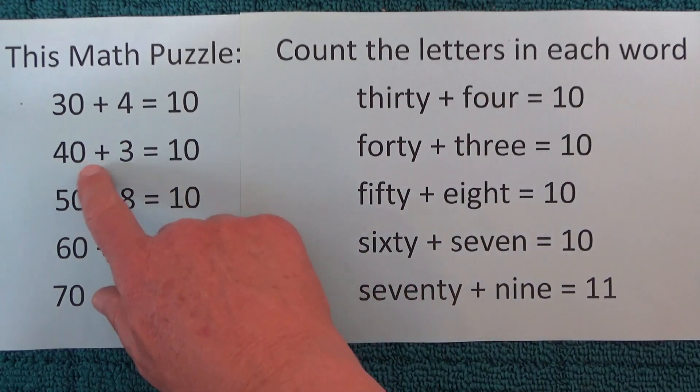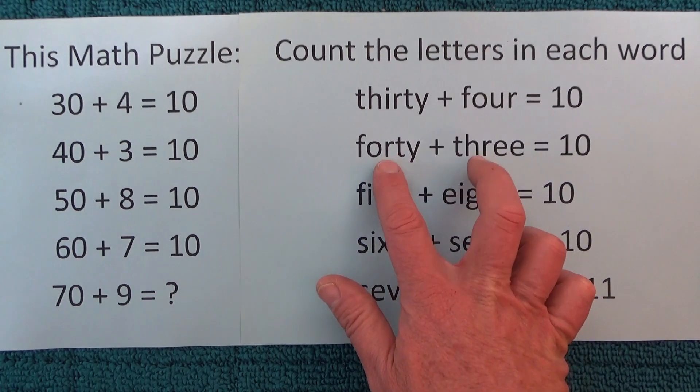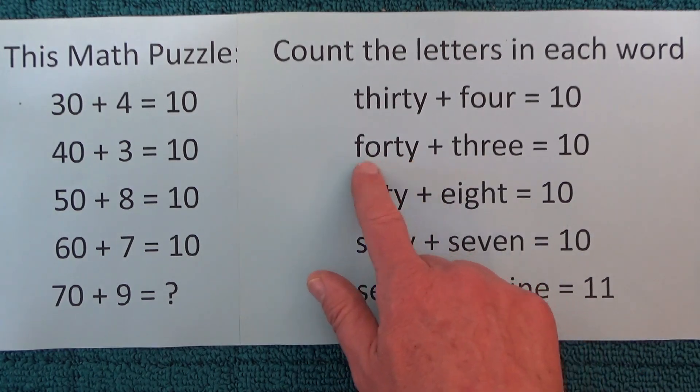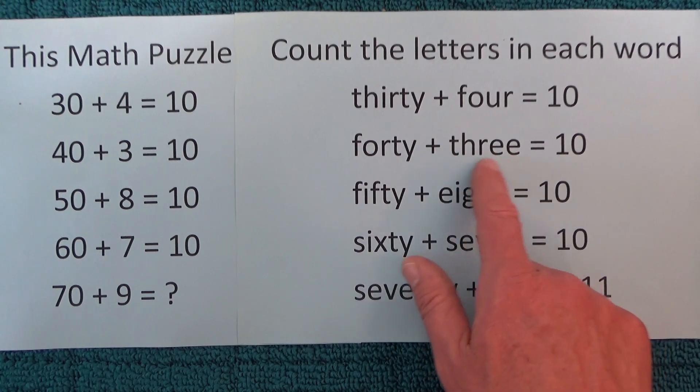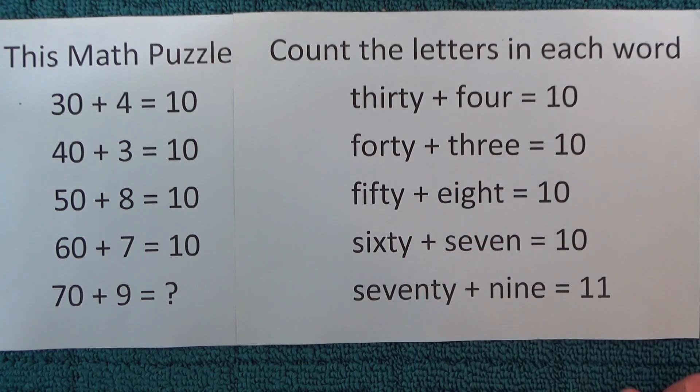So it's the same with 40 plus 3. You've just got to count the letters in each of those words. So you've got 5 letters in forty and 5 letters in three, and 5 plus 5 equals 10.